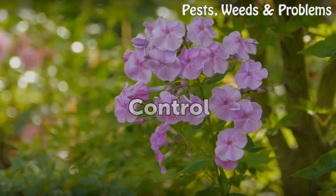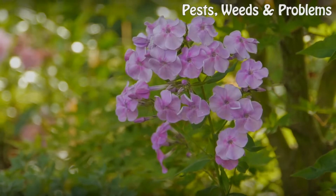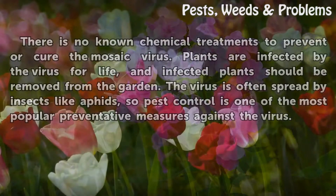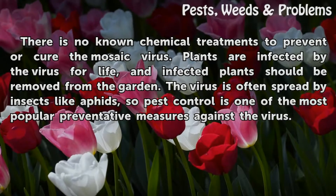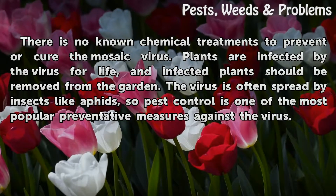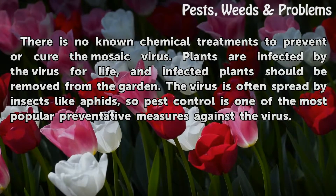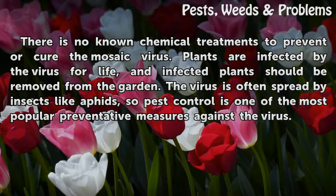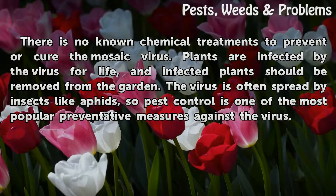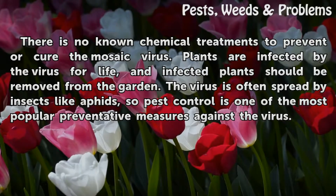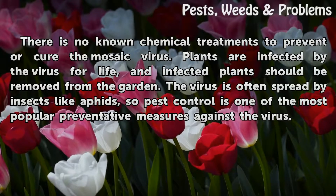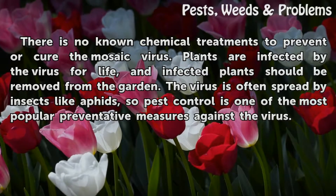Control: There are no known chemical treatments to prevent or cure the mosaic virus. Plants are infected by the virus for life, and infected plants should be removed from the garden. The virus is often spread by insects like aphids, so pest control is one of the most popular preventative measures against the virus.